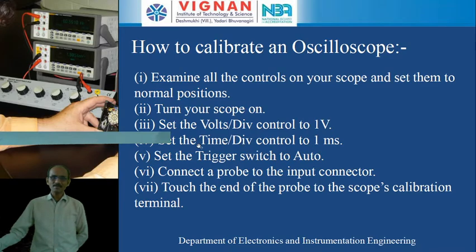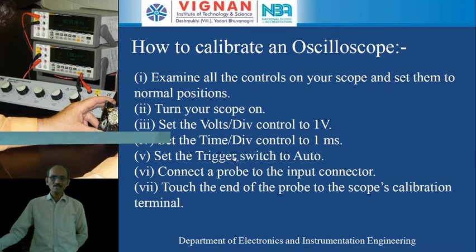The times per division knob is used for increasing and decreasing the width of the signal. Next, set the trigger switch to auto mode. We will be having a trigger switch on the front panel, and we have to keep the trigger switch in auto mode. Auto mode means automatic.